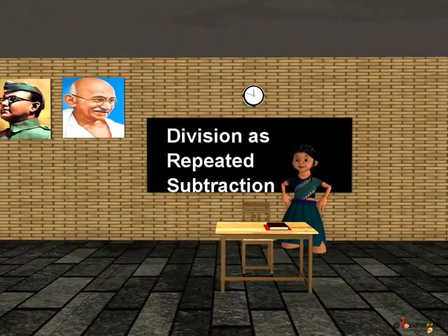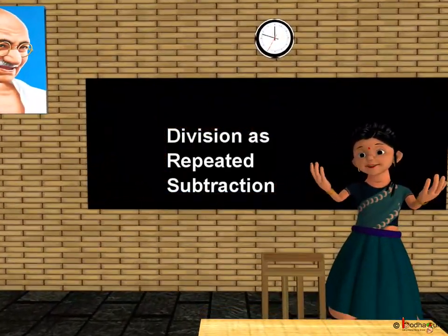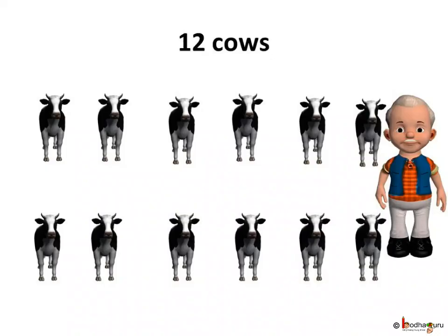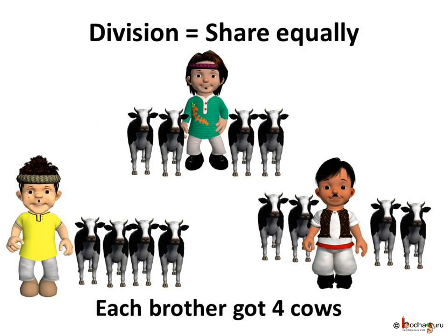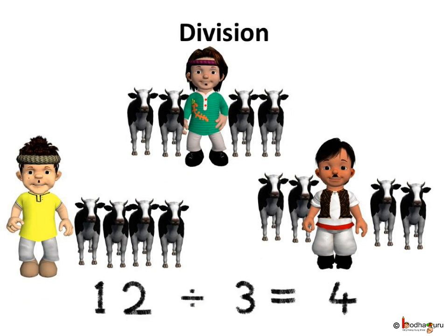Good morning children. Now you know what is division. As we saw in the story, there were 12 cows with the farmer. When his property was divided amongst the three sons, the 12 cows were shared equally by three brothers, which gives four cows to each. So, 12 cows were divided amongst three brothers and each brother got four cows.